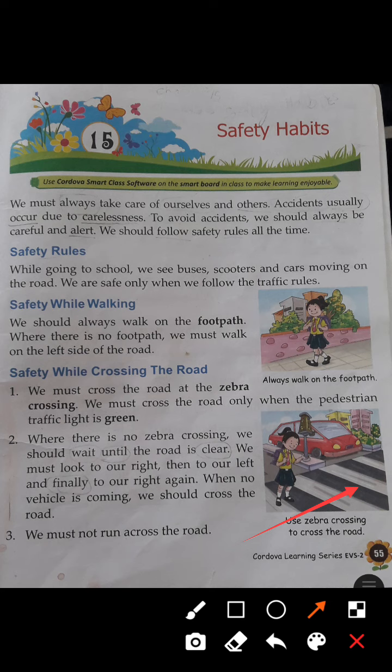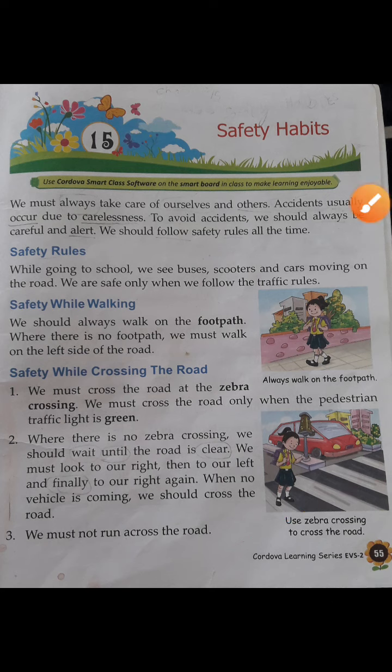When there is no zebra crossing, we must look to our right, then to our left, and finally to the right again. When no vehicle is coming, we should cross the road. We must not run across the road — running across the road is not advisable. We should be very careful on the road.